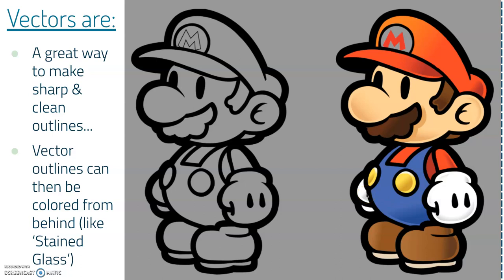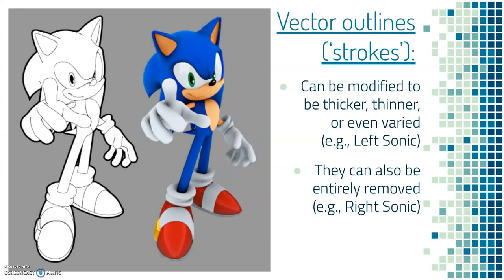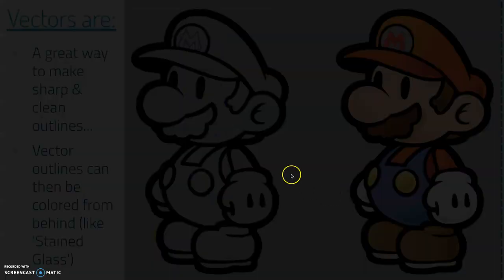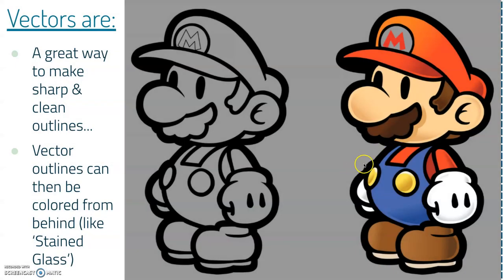Paper Mario is a great example. Once they were able to do higher resolution video games, they started bringing vector designs into it, which brought video games back to a kind of flat design — really interesting when it can have shadows and gradients.